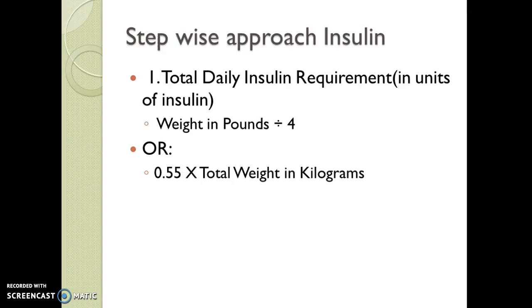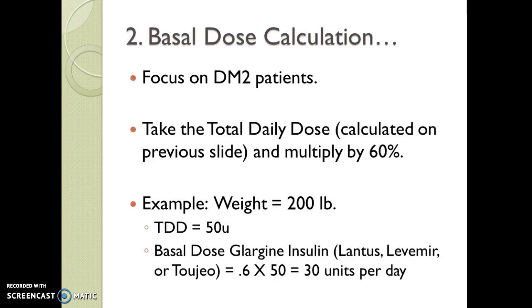I want to walk you through the math in a stepwise approach. The first thing we have to do is calculate the total daily insulin requirement in units of insulin. Two simple ways to do that: one is to take weight in pounds and divide it by four. Alternatively, we can take the total weight in kilograms and multiply it by 0.55. This gives us our total daily dose.